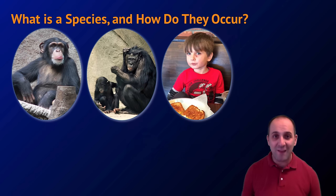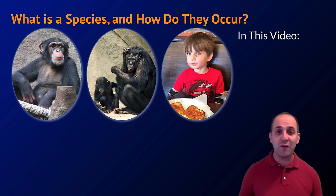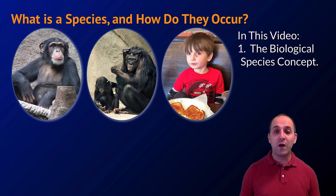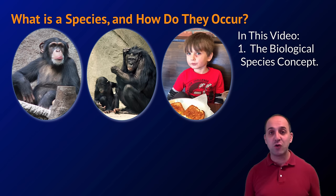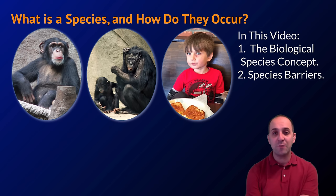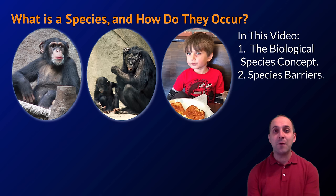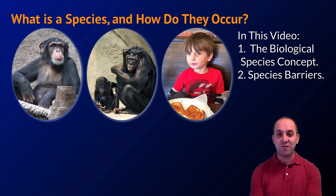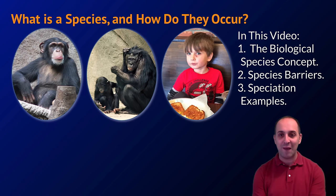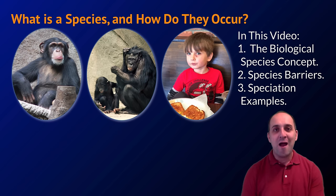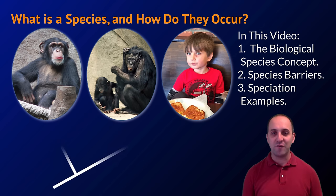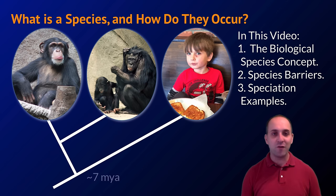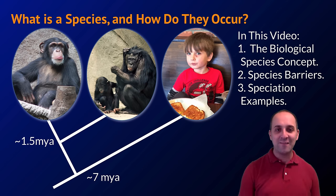What is a species and how do they occur? In this video we're going to talk about this notion of the biological species concept, the barriers that keep different species from being the same species, and we'll talk about some examples of speciation.